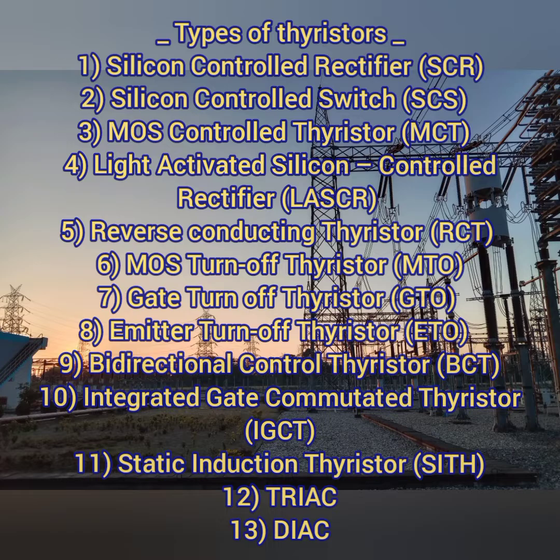The types of thyristors include: Silicon Controlled Rectifier (SCR), Silicon Controlled Switch (SCS), MOSFET Controlled Thyristor, Light Activated Silicon Controlled Rectifiers, Reverse Conducting Thyristors, MOSFET Turn-off Thyristors, Gate Turn-off Thyristor, Emitter Turn-off Thyristor, Bidirectional Controlled Thyristors, Integrated Gate Commutated Thyristors, Static Induction Thyristors, TRIAC and DIAC — which means a diode and triode AC conductance.